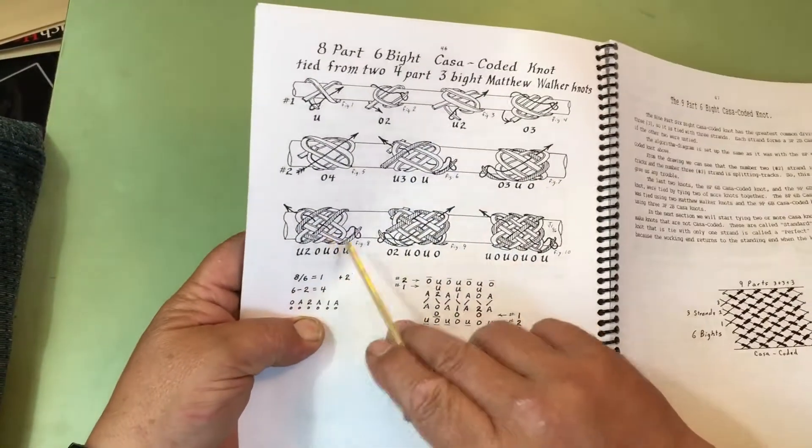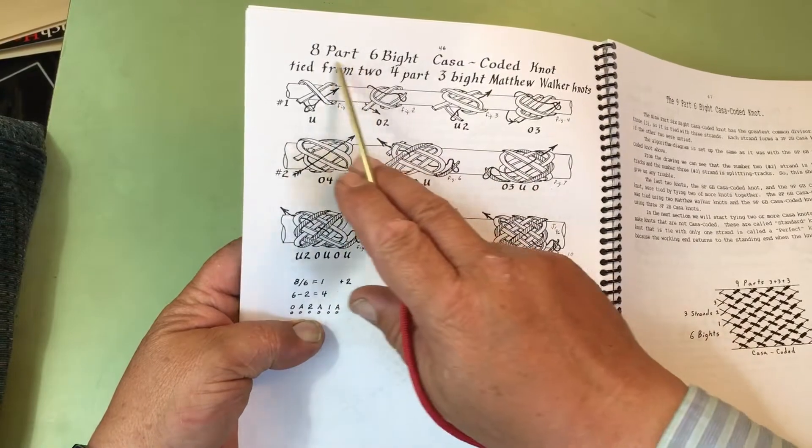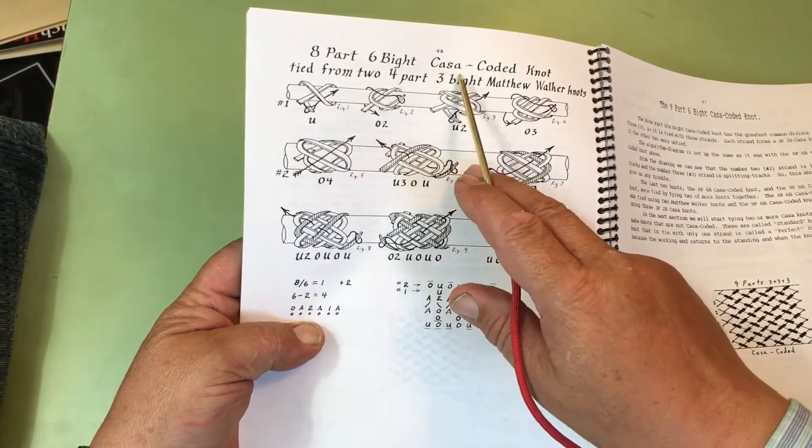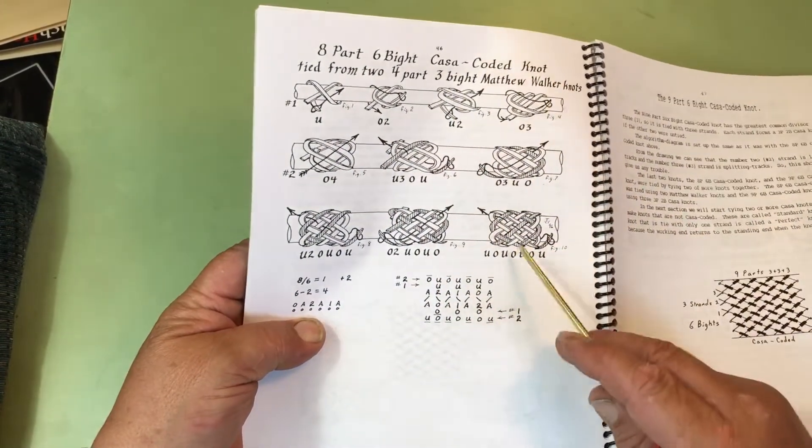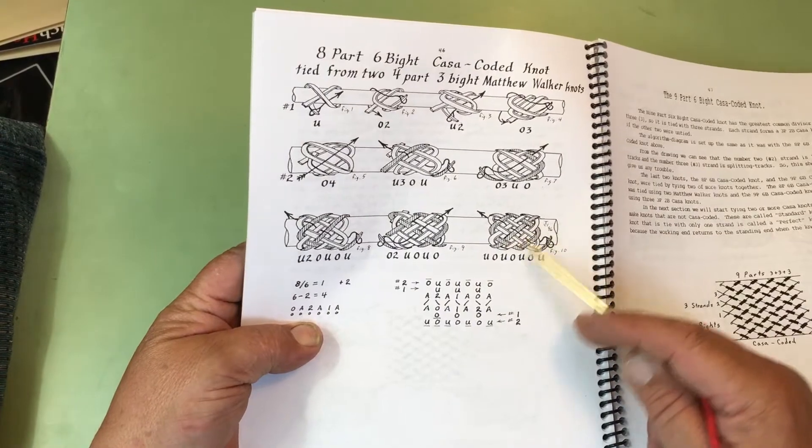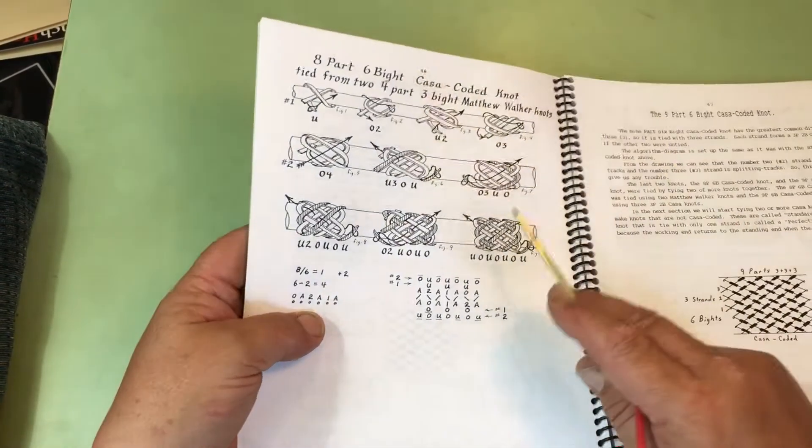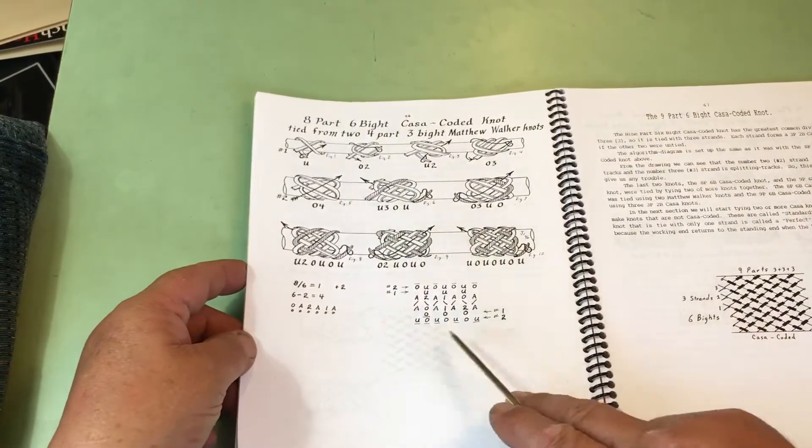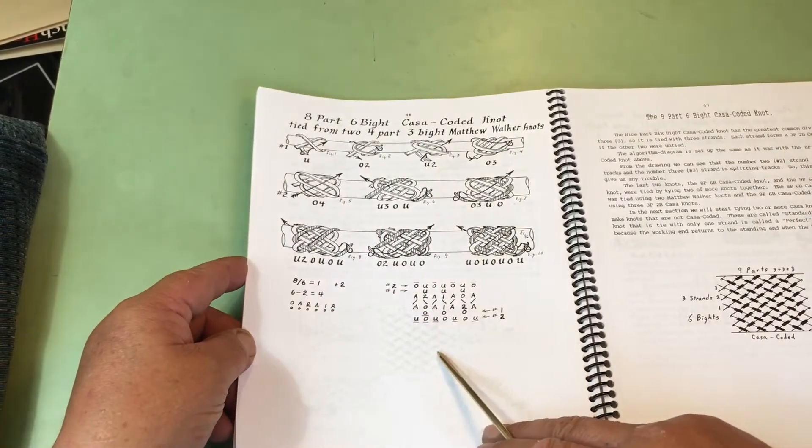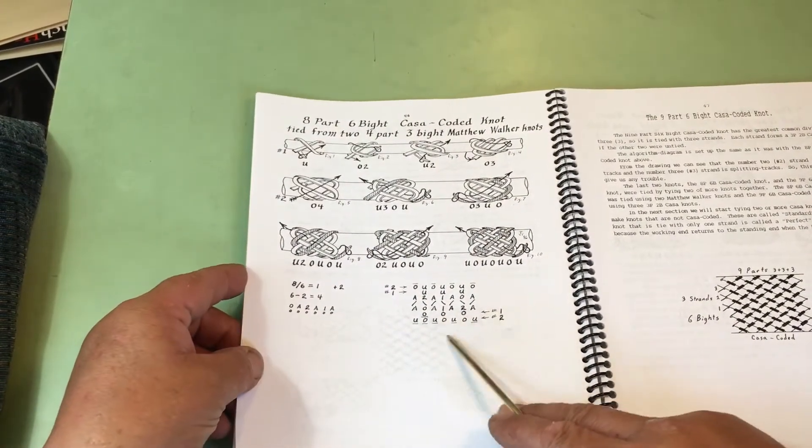And you'll notice that this eight-part, six-bight, Casa-coated knot is what they call the barber pole interweave. So, some of you have already tied that knot. Well, you can calculate out how to tie it using this algorithm diagram.